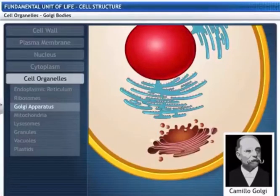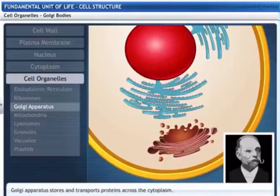Vesicles containing soluble proteins produced by the endoplasmic reticulum fuse with dictyosomes. These vesicles are transported across the cytoplasm. They fuse with the cell membrane and release the proteins outside the cell.